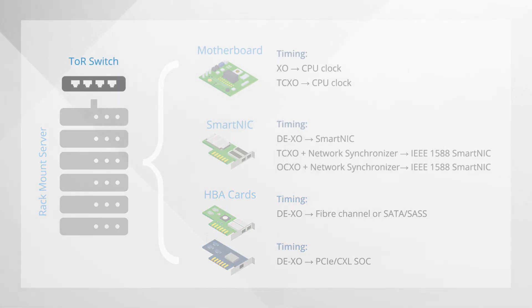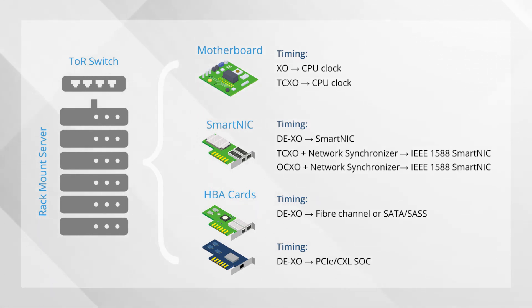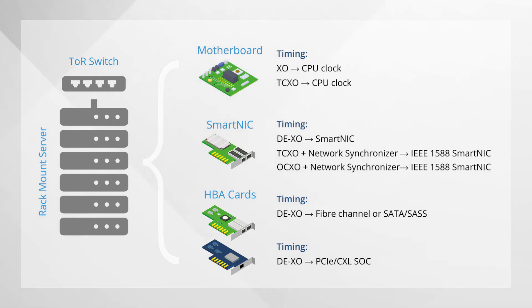The top-of-rack or leaf switch is also located in the server rack, often at the top, and is used to aggregate server traffic between the spine switches and either the core network or servers. This switch will employ at least one timing solution, from a single differential oscillator to a combination of TCXOs and OCXOs and jitter cleaners, depending on the need for synchronous Ethernet and IEEE 1588 performance, which increases as bandwidth expands in next-gen deployments.